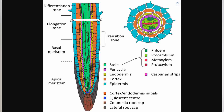If you look at this diagram, it's divided basically into three sections. You have the apical meristem, which is the region of rapid cell division, and you also have the elongation zone, and you have a region of cell differentiation.